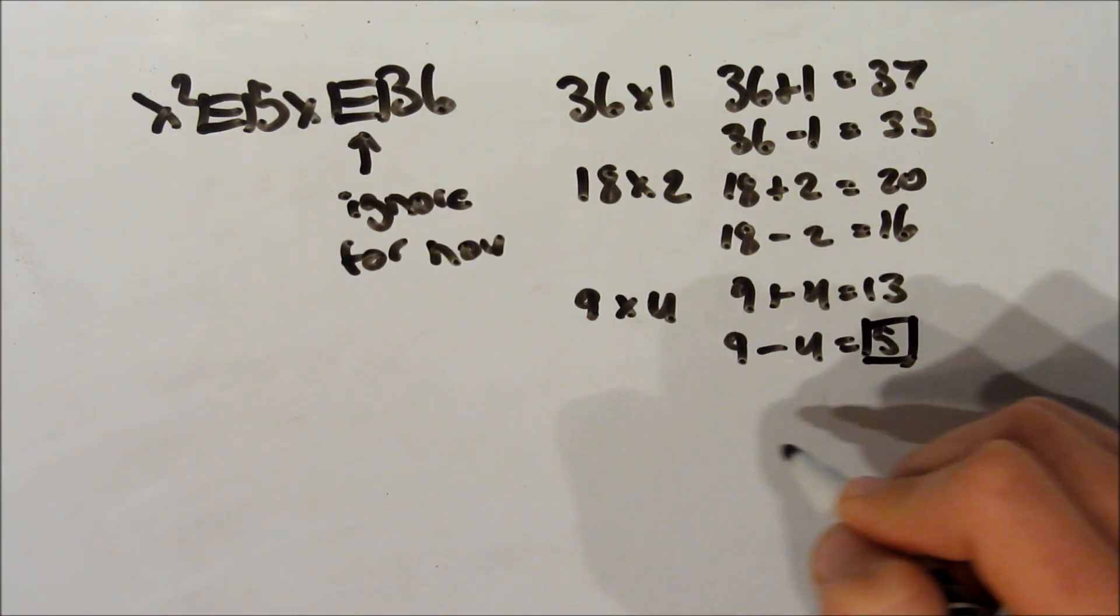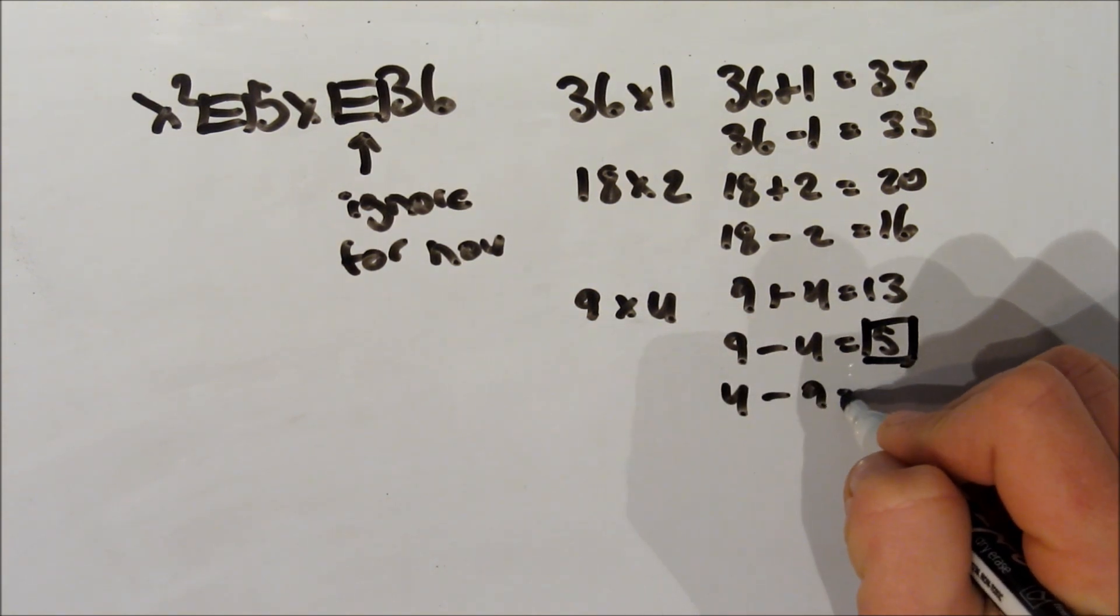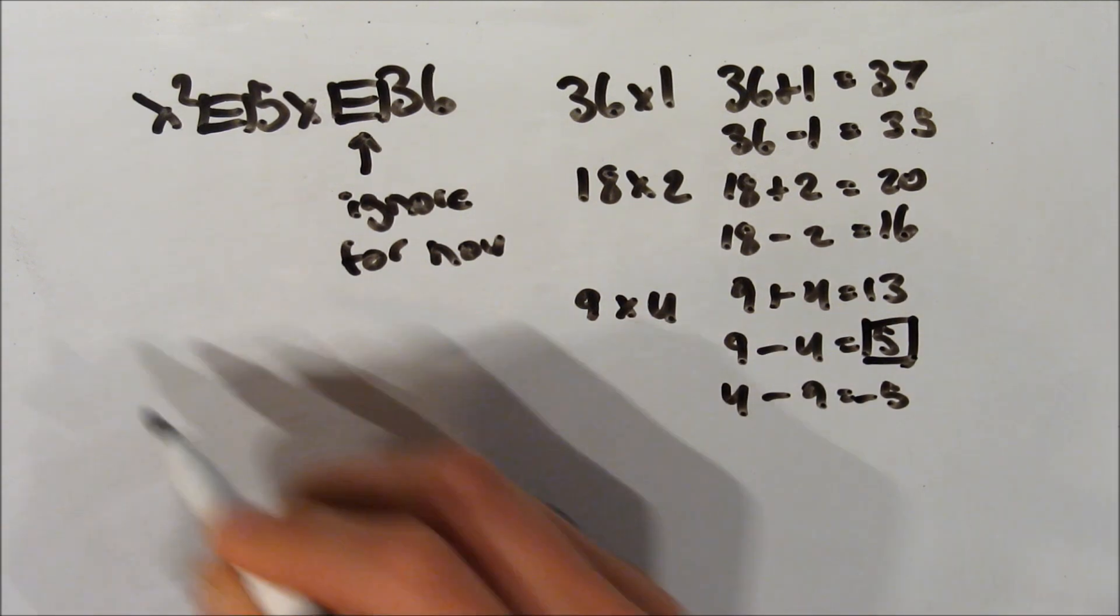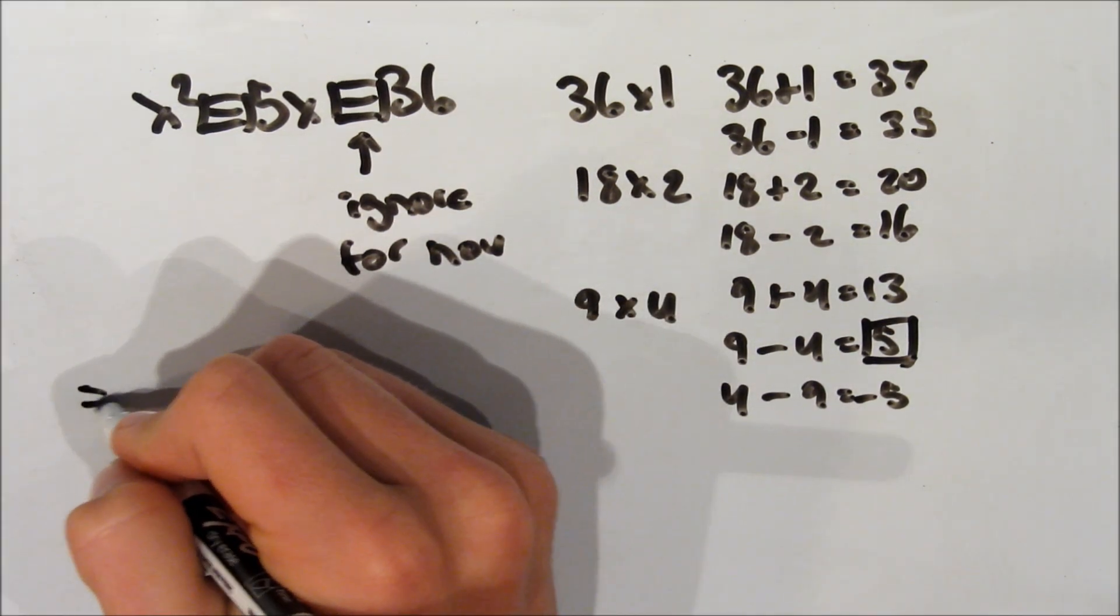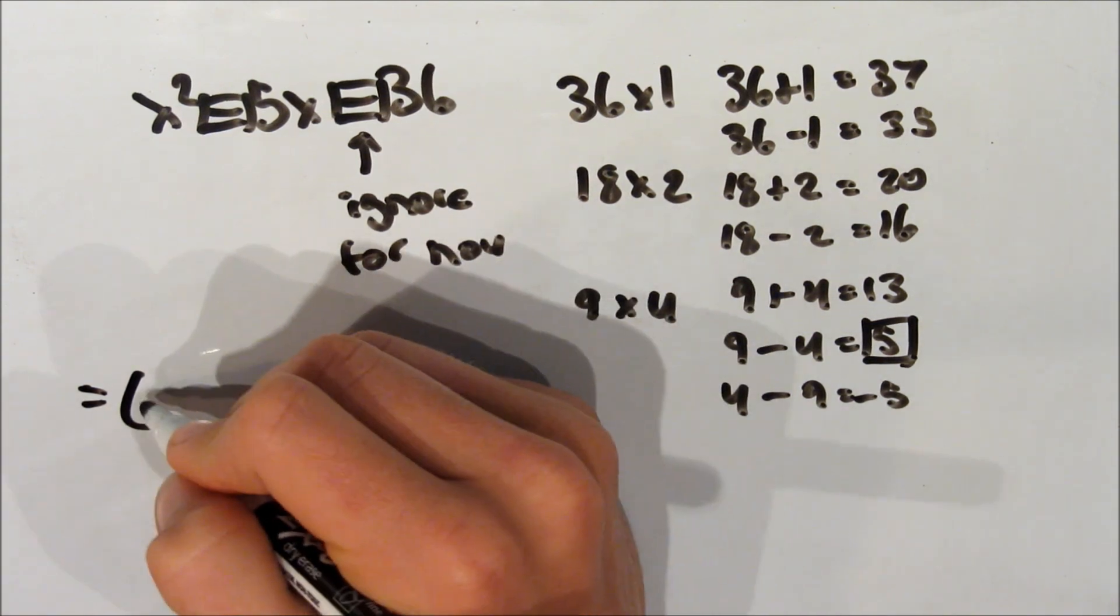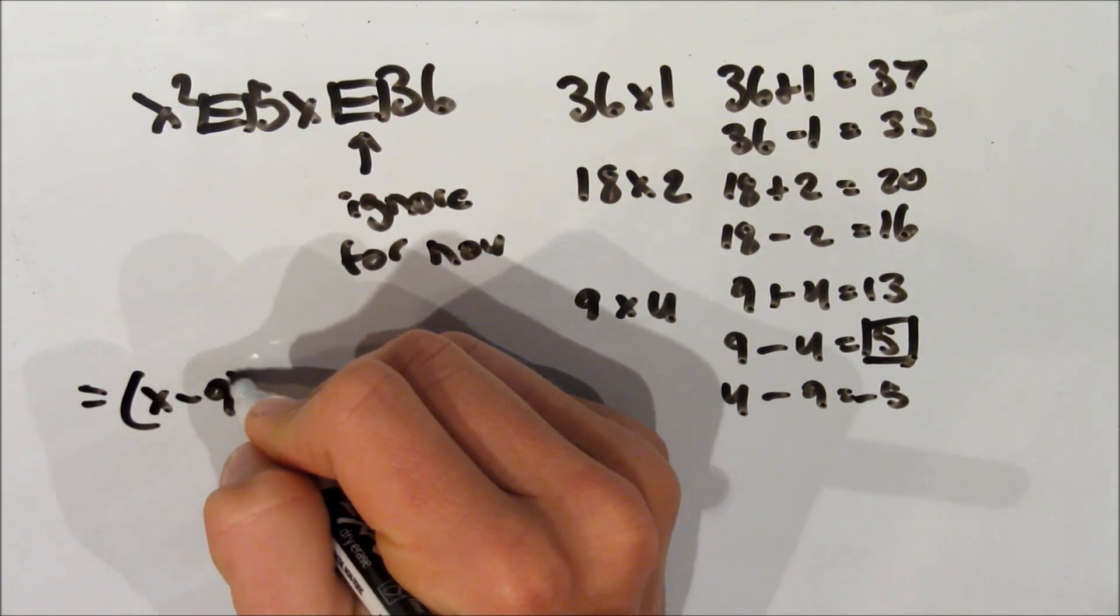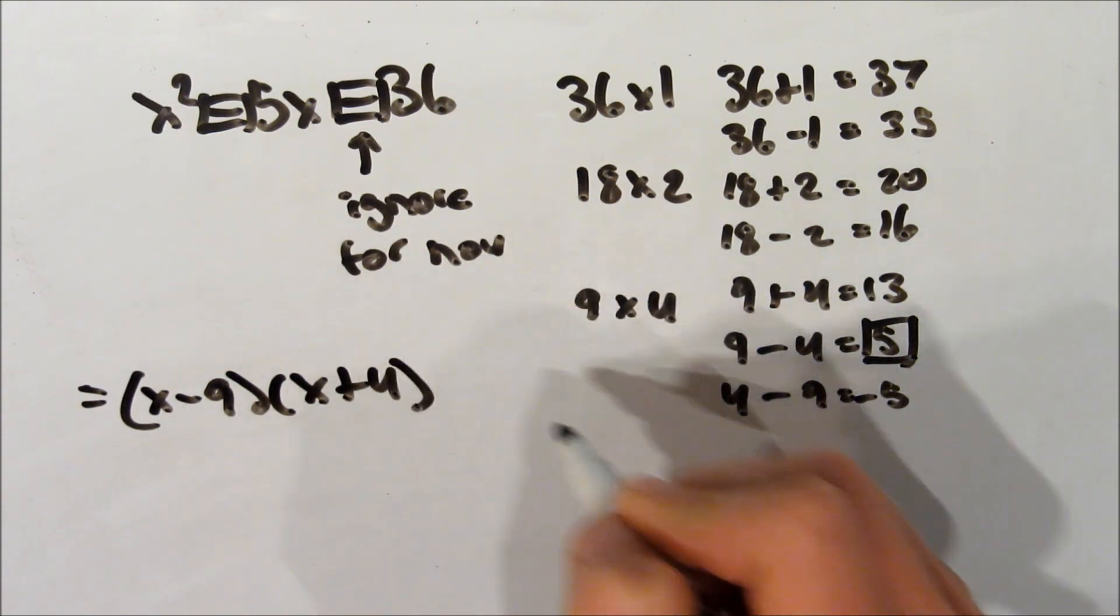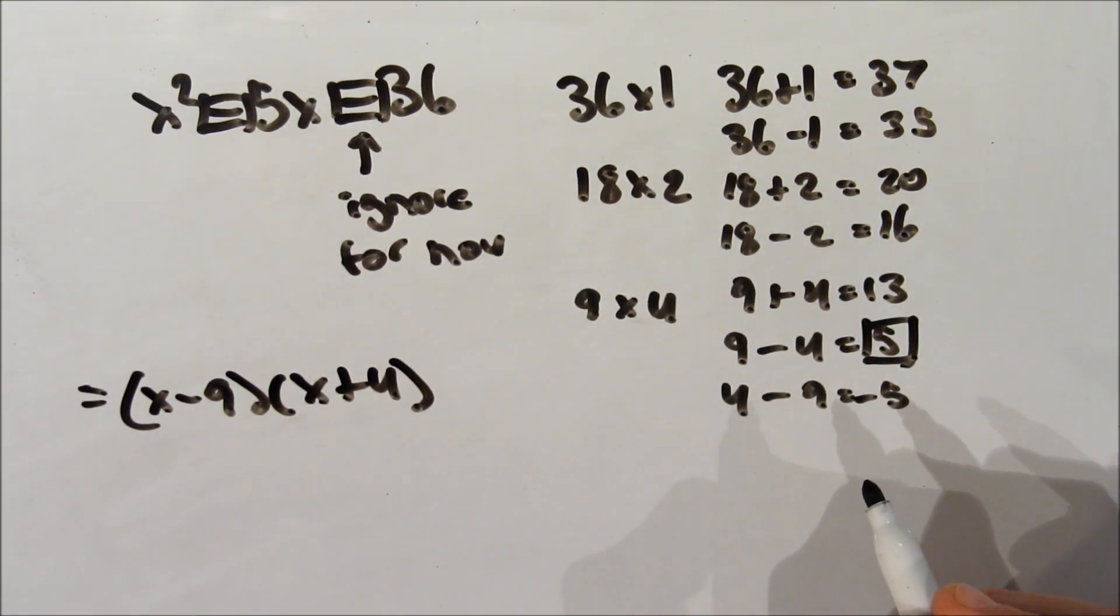So we know that instead of it just being x plus e, or whatever the e value may be, or x plus f, this time we have x minus instead. So it's really the same idea, except you just have a minus sign in there, except for a plus. So really not too bad. So x minus 9, and x plus 4. And that works.